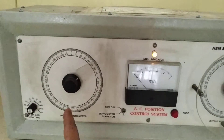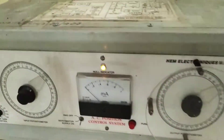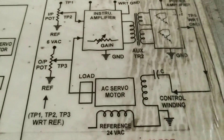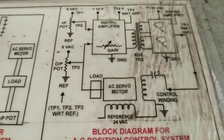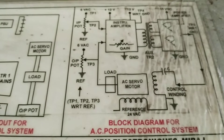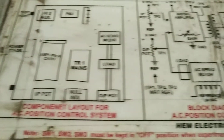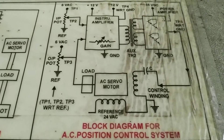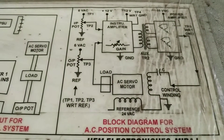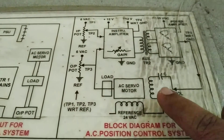You can see here this has the input potentiometer and this has the output potentiometer. This has the diagram — I have already posted the diagram of the AC position control on Google Classroom. So we have already considered the block diagram of the AC position control.